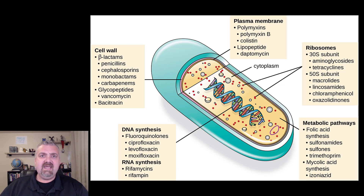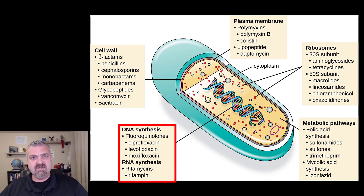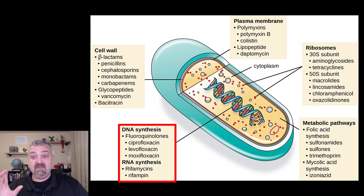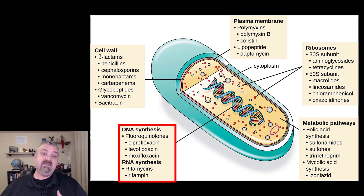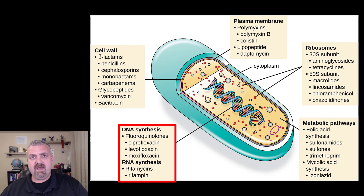The last group: DNA and RNA synthesis inhibitors. These generally come with quite a few side effects, and there aren't a lot of drugs in this group for the same reason — we have to make DNA and RNA too. So if we can find a way to selectively block the production of microbial DNA and RNA synthesis without hurting how our human cells make it, then that's an awesome thing.